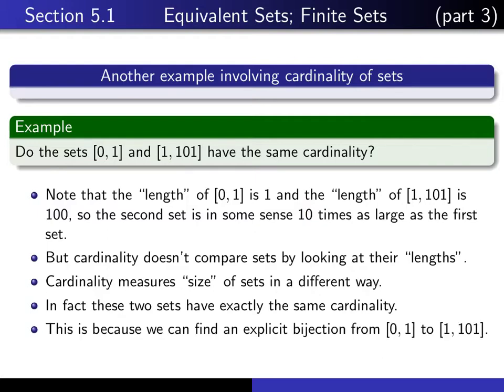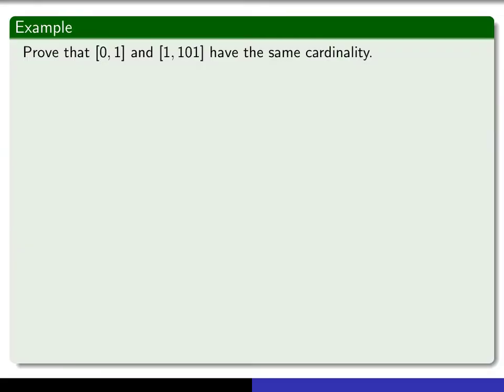And the reason this is the case is that there really is an explicit bijection from the set [0,1] to the set [1,101].